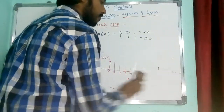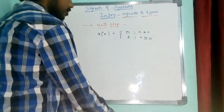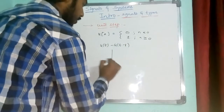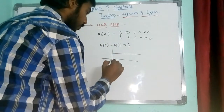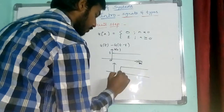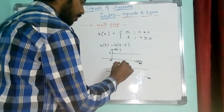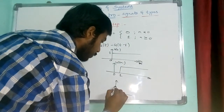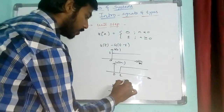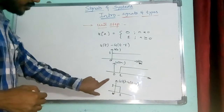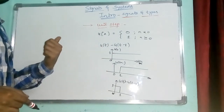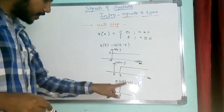If we do the same thing in the continuous domain — u(t) − u(t−1) — we get a different result. u(t) goes from 0 to infinity with value 1, and u(t−1) starts from 1 to infinity. When subtracted, we get a rectangular signal of time period 1, not an impulse. So in the discrete case we get an impulse, but in continuous we get a rectangular window.